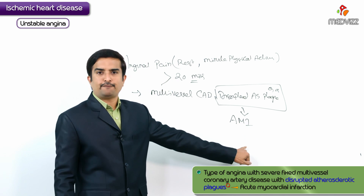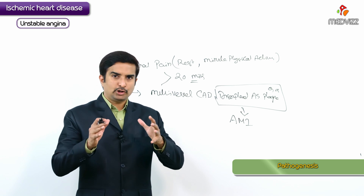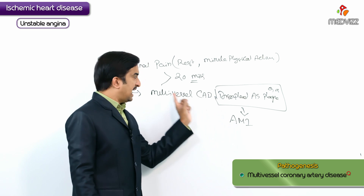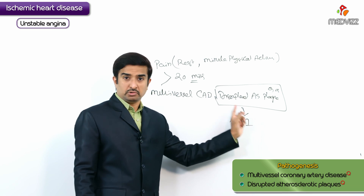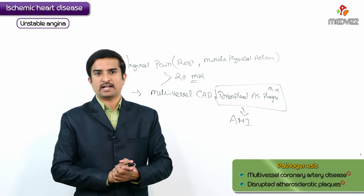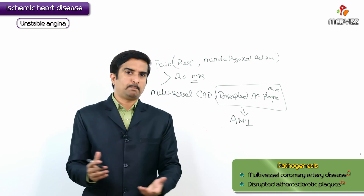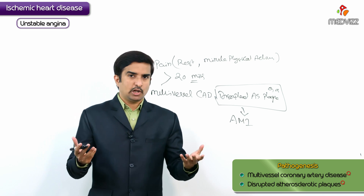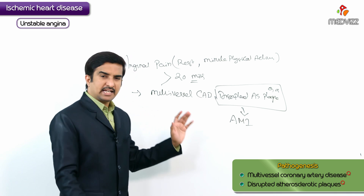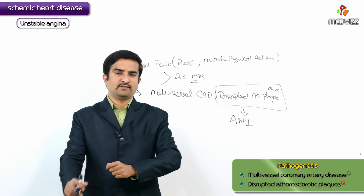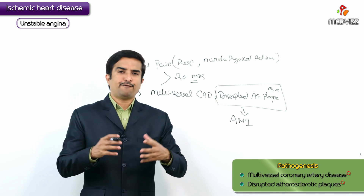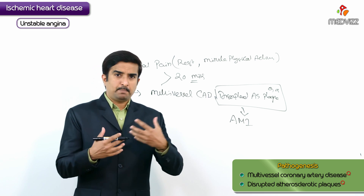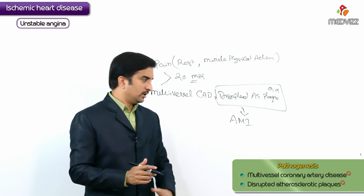This is why unstable angina is called pre-infarction angina. The pathogenesis involves multi-vessel coronary artery disease and disrupted atherosclerotic plaques, with or without platelet non-occlusive thrombi. In such conditions, greater than 90 percent of the coronary artery lumen is compromised, leaving only 5 to 10 percent blood flow to the myocardium, predisposing to acute myocardial infarction.